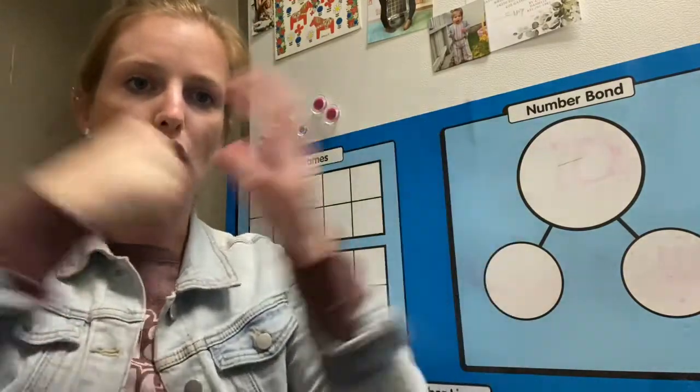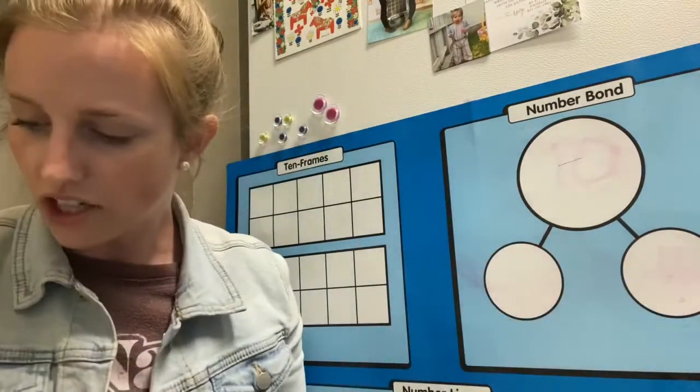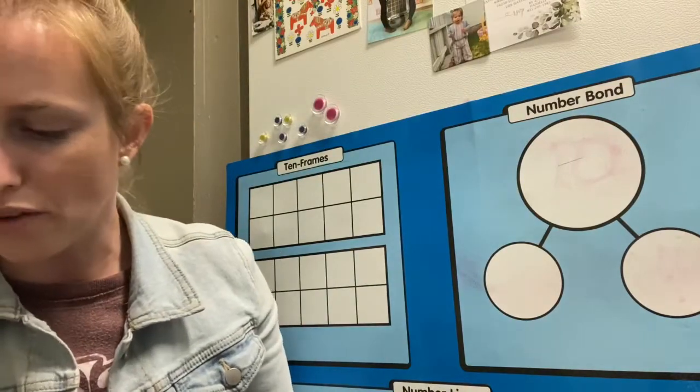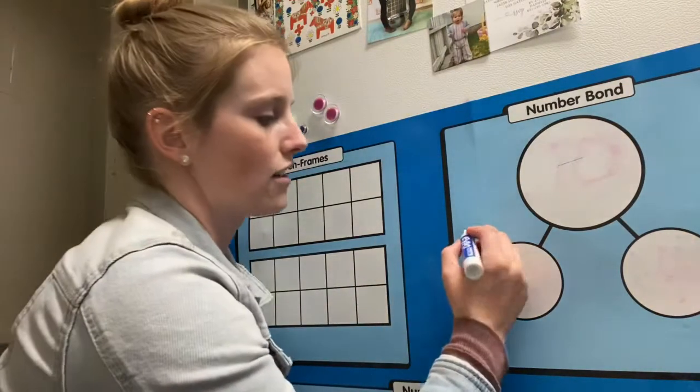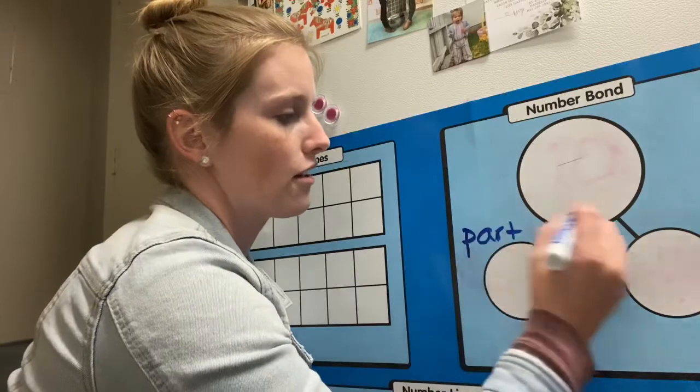We're working with our number bond. So we're doing part, part, whole. In addition, these are the academic words for them. It's called the addend. So I'm going to put part, part, whole.